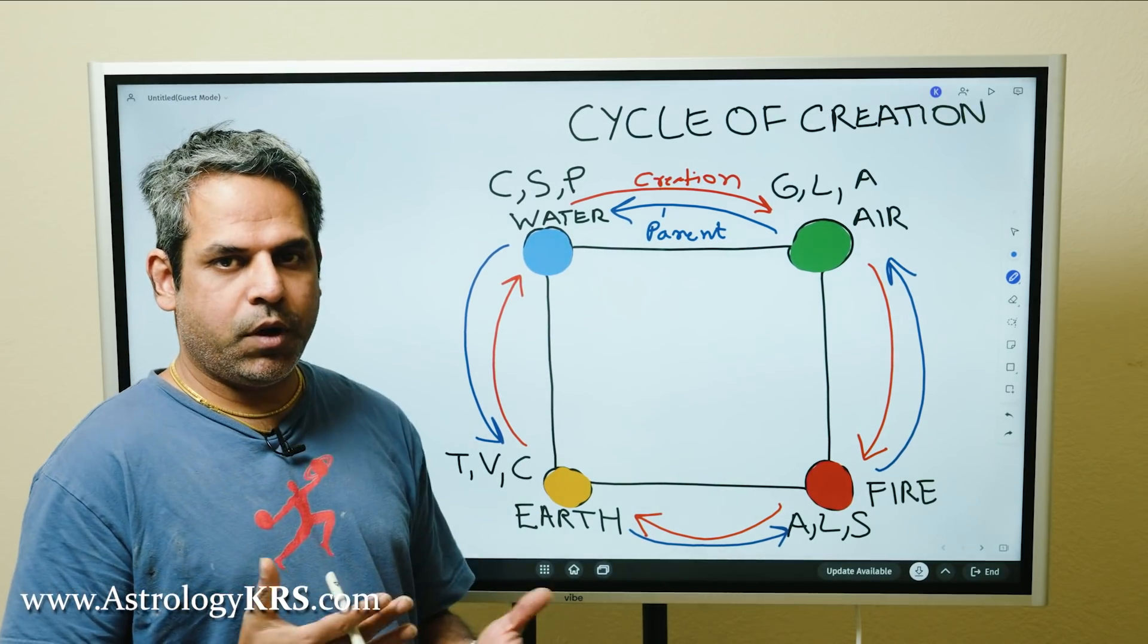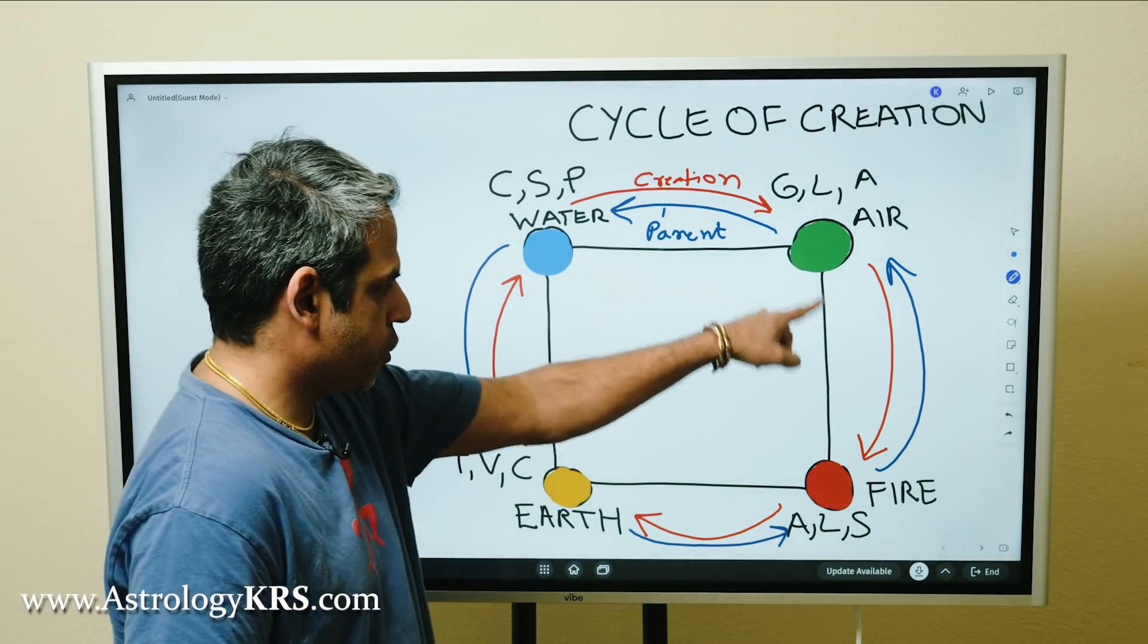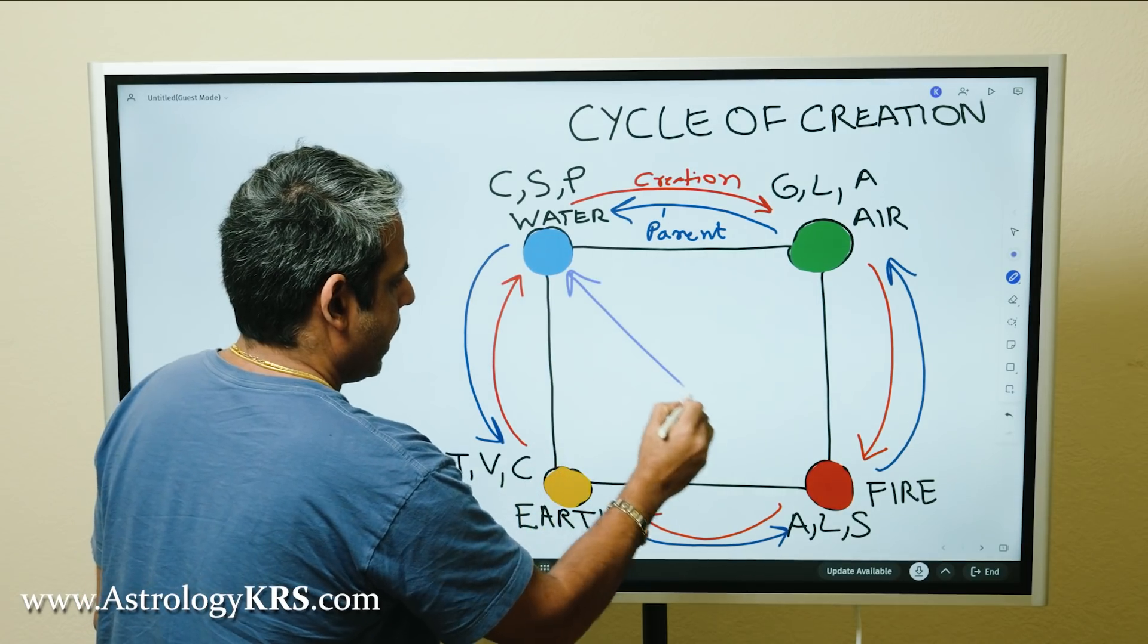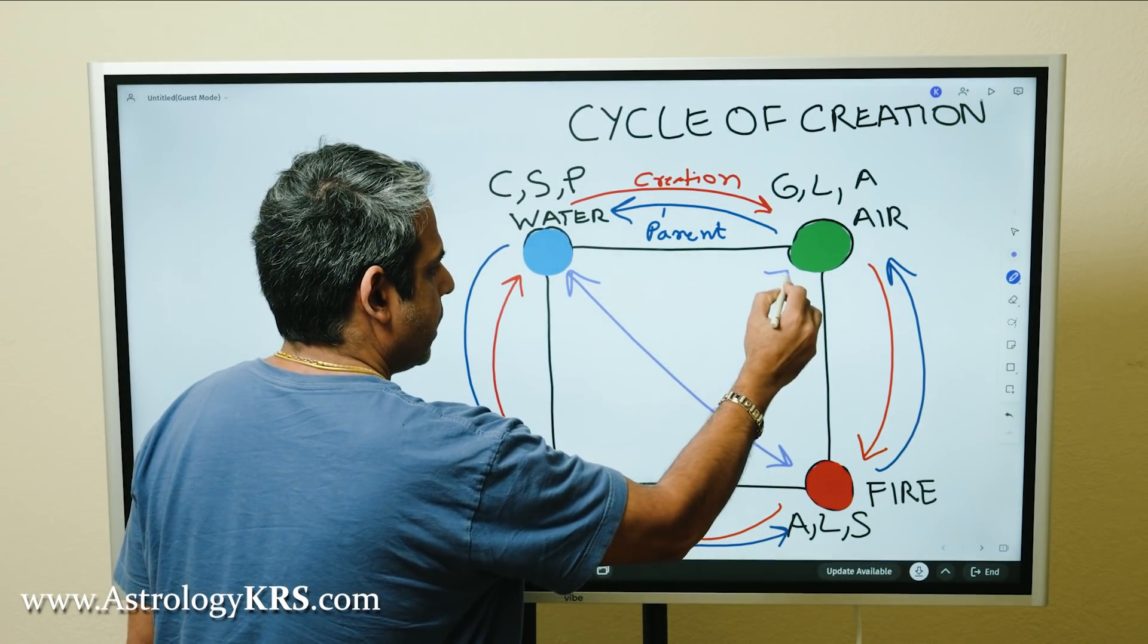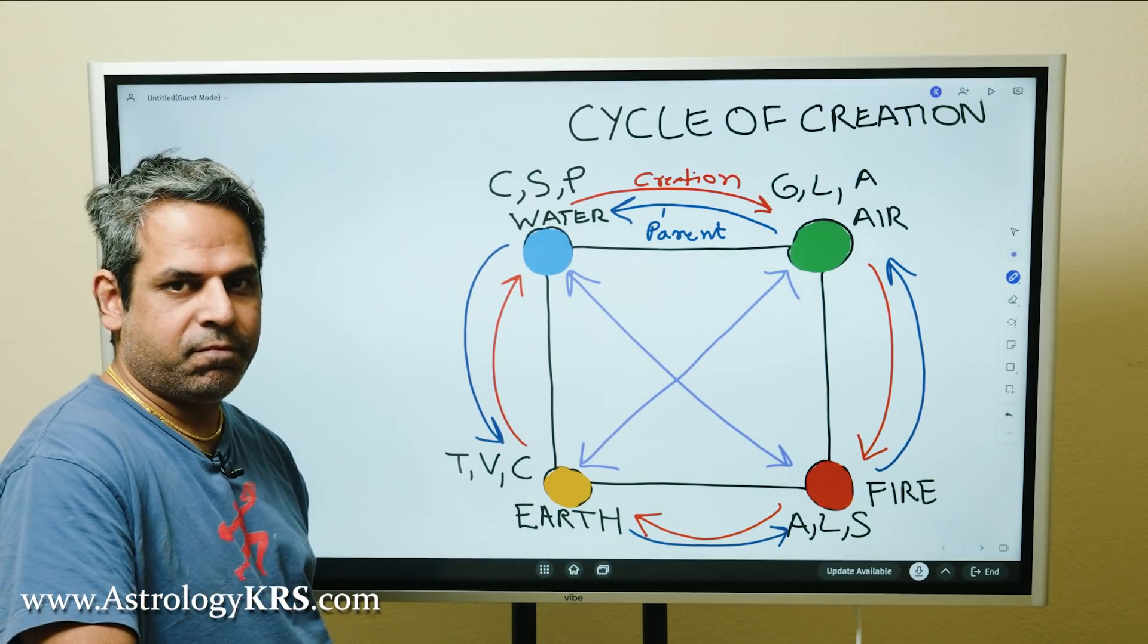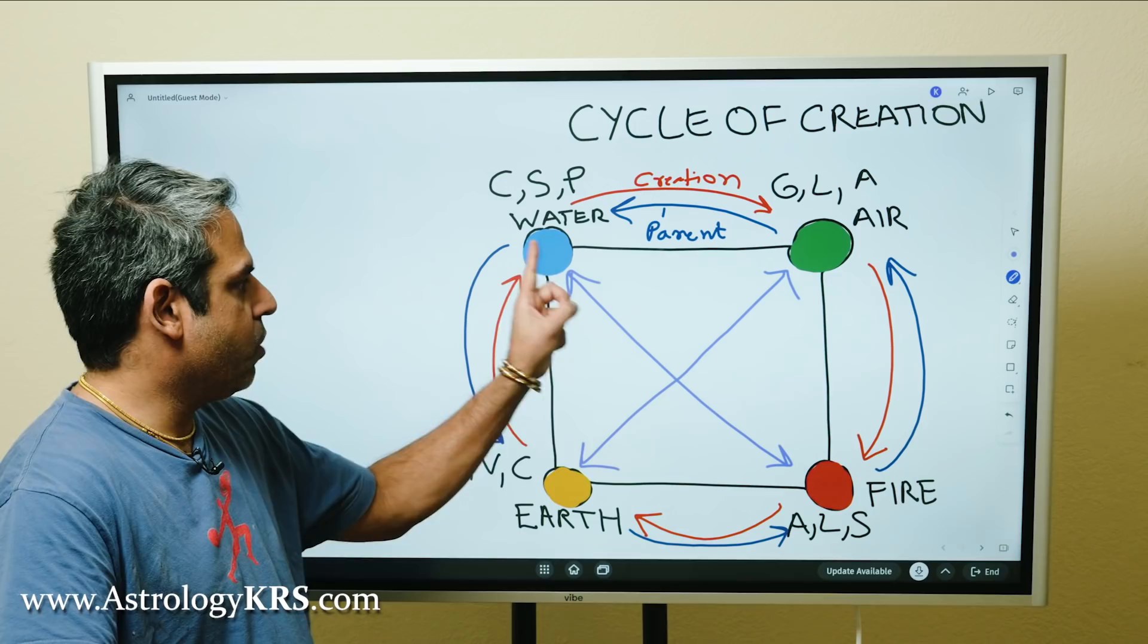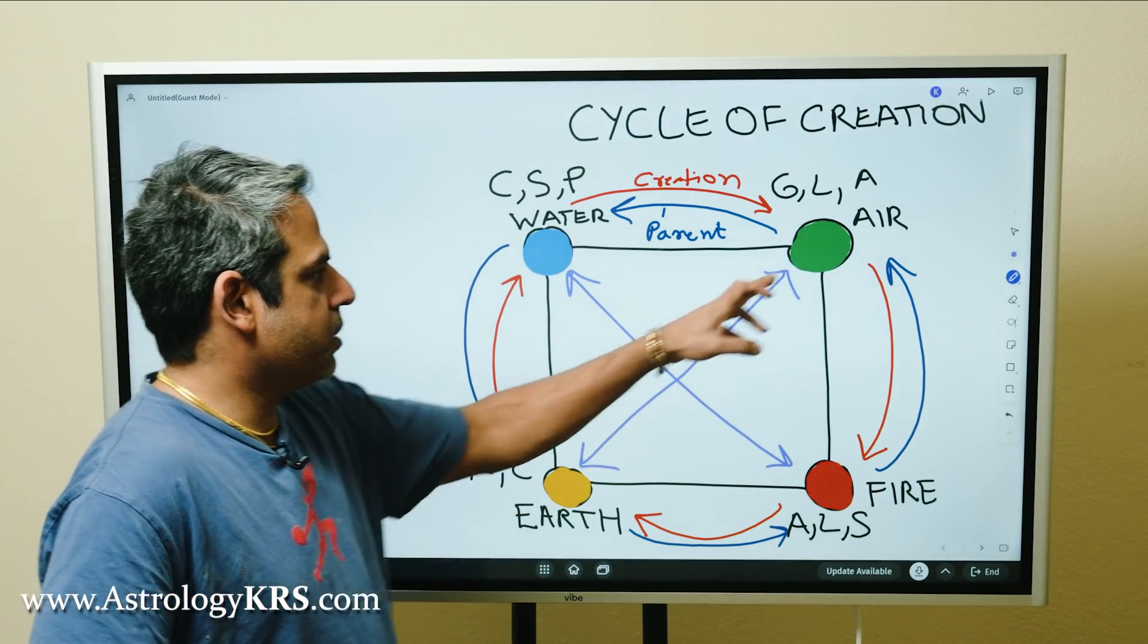The first thing you want to understand is that this has animosity with that and vice versa. Meaning water will consider fire its obstacle and fire will consider water its obstacle. Air will consider earth its obstacle and earth will consider air its obstacle.